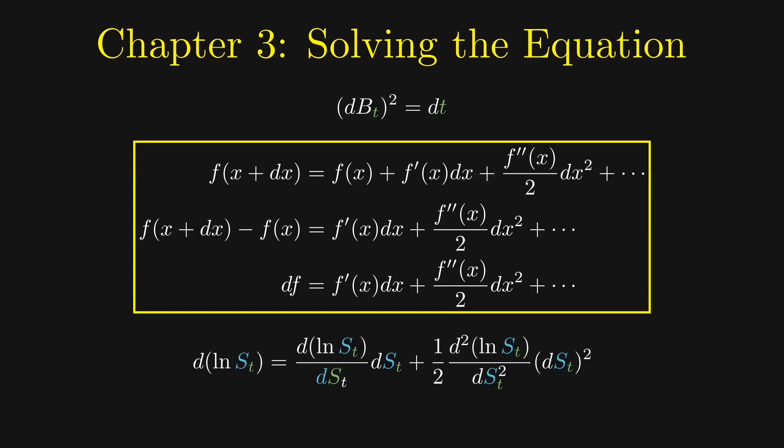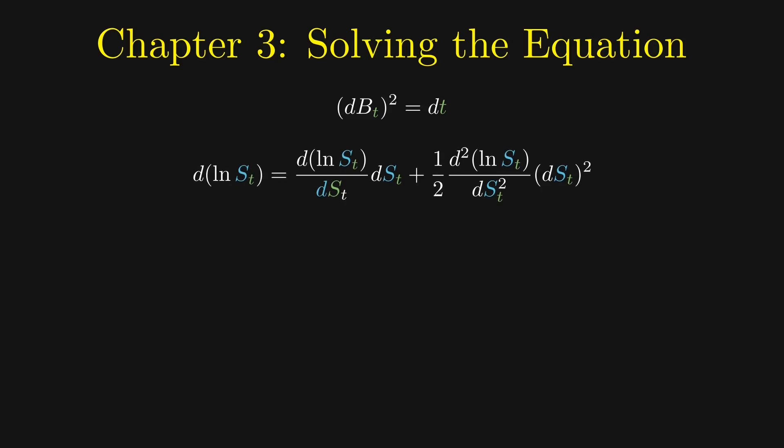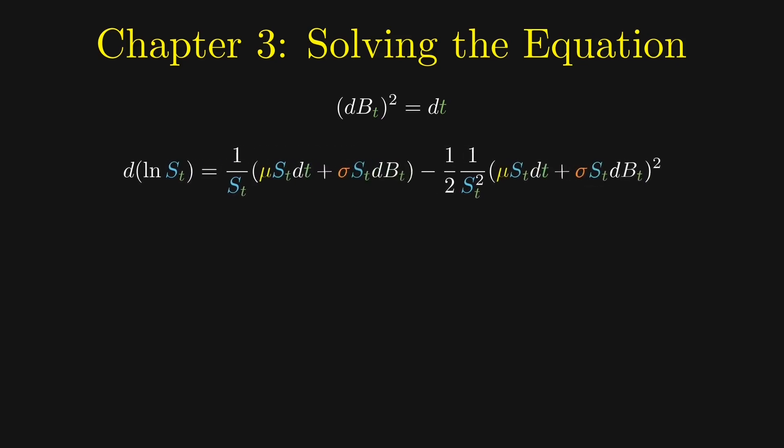Substituting log S_t, we have the following expansion. We first compute the first and second derivatives of the log function. Then we substitute our differential equation. Notice that the terms dt times dB_t and dt squared can be ignored as they are of higher order than dt. We only need to retain the dB_t squared term. Finally, with dB_t squared equals dt, we get this simple equation.